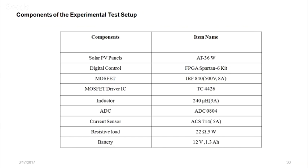The driver IC converts the 5V, 20mA controller signal to 12V with sufficient current to turn the MOSFET on and off. This is analogous to using L293D to drive a DC motor from a microcontroller. The TC4426/MIC4428 was found to work well with the IRF840. One IC contains two gate drivers, so a single driver IC can control two MOSFETs. An experiment on a step-down chopper (boost converter) was also performed using this MOSFET and driver IC combination.